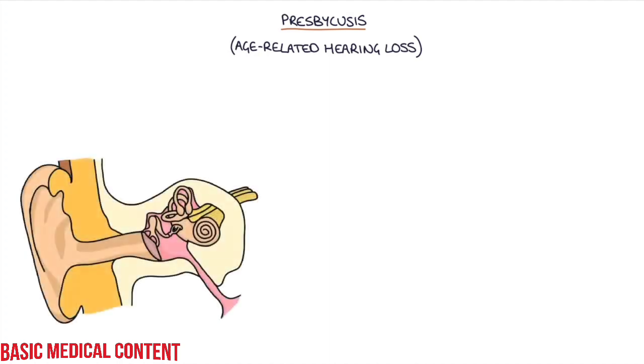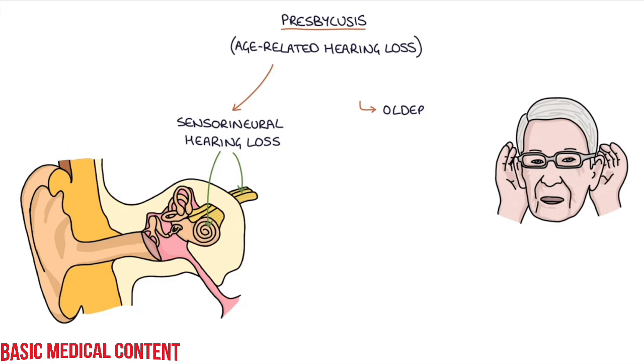In this video I'm going to be going through presbycusis, which is also known as age-related hearing loss. Presbycusis is described as age-related hearing loss. It's a type of sensory neural hearing loss that occurs in people as they get older.